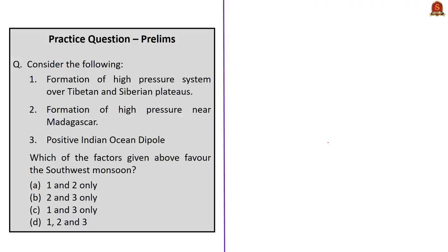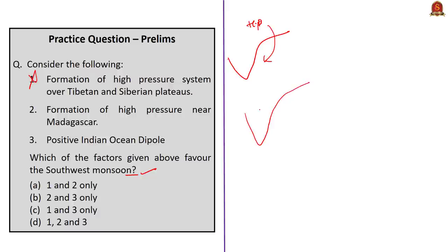A prelims practice question: which of the given factors favors the southwest monsoon? Factor 1 — formation of high pressure system over Tibetan and Siberian plateaus — is incorrect. A high pressure system over Tibetan and Siberian plateaus favors the northeast monsoon, not the southwest monsoon. For southwest monsoon, there must be a low pressure area on the landmass so that winds move from the high pressure oceanic part to the landmass.